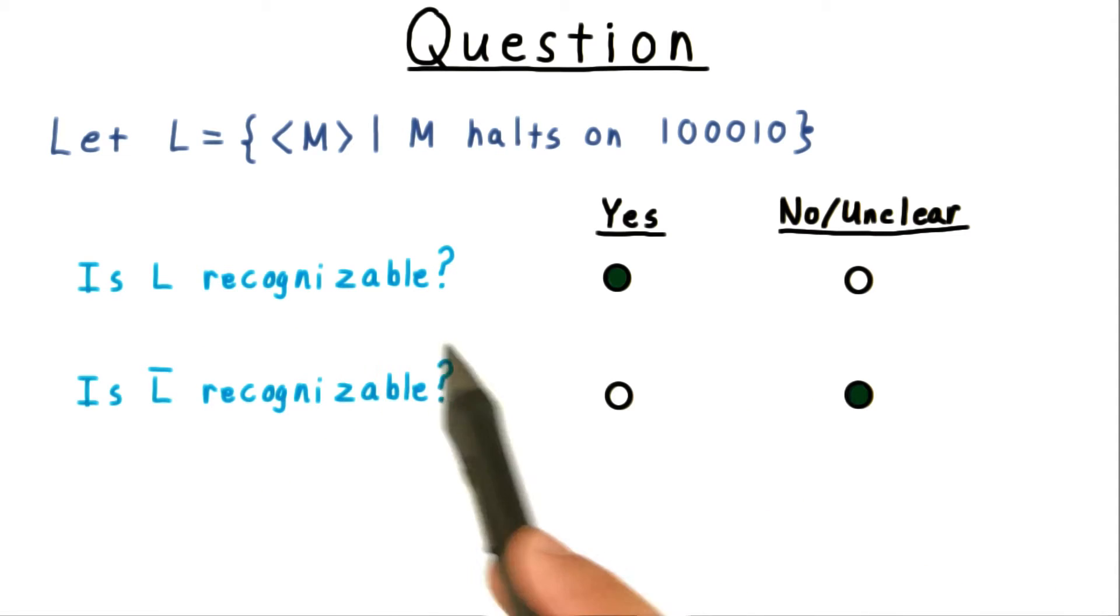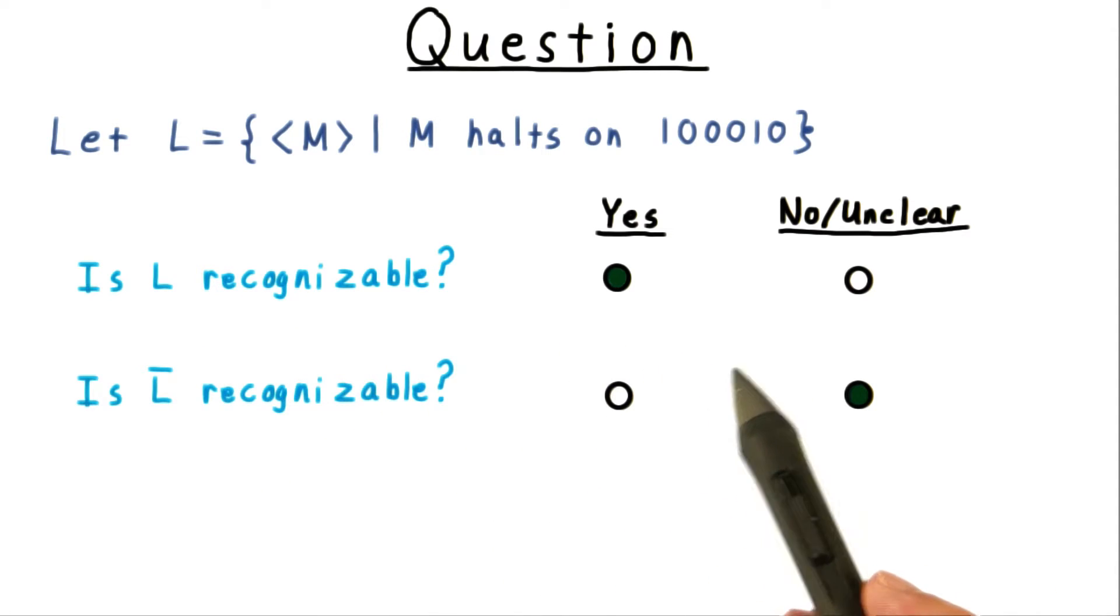The answer is that L is recognizable. A machine that recognizes L is fairly simple.